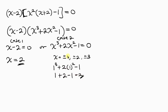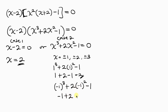Let's try x = -1: (-1)³ + 2(-1)² - 1 = -1 + 2 - 1 = 0. Since we get zero, x = -1 is a root, and therefore (x + 1) is a factor.